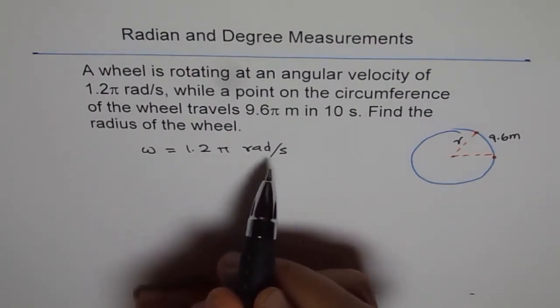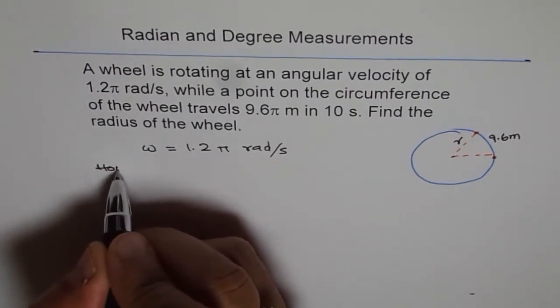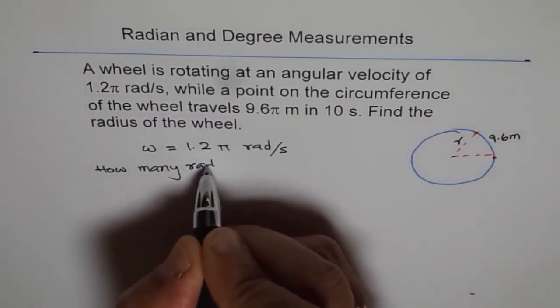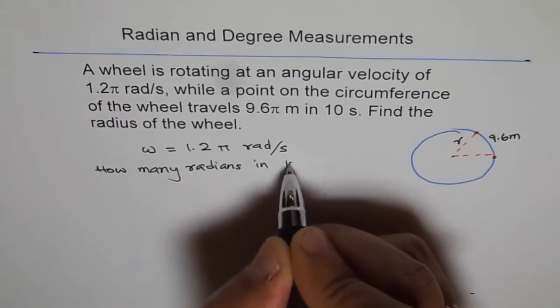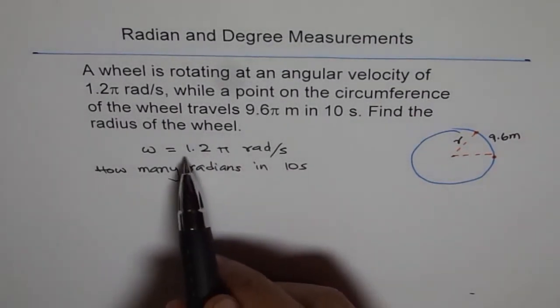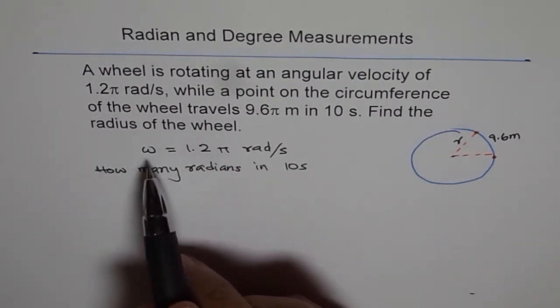So it is so many radians in 1 second. Then how many radians in 10 seconds? So how many radians in 10 seconds will it travel? This is what we need to figure out. So we know it is 1.2π radians in 1 second. That is the meaning of angular velocity.